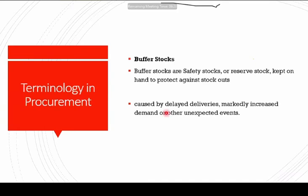Let's look at key terminology to understand the procurement process. Buffer stocks are safety stock or reserve stock that should be kept on hand so that we have no stock-out at the time we are making procurement. When we are planning procurement of drugs, there has to be reserve stock in the hospitals. If these reserve stocks are depleted, there will be a stock-out, so you don't procure when your shelves are at zero — that is wrong management.